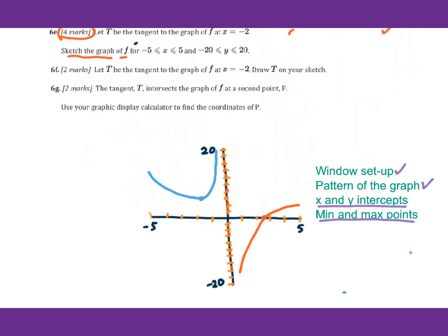For 6f, let t be the tangent to the graph f at x equals to negative 2. We know this is at negative 2, this point. Draw t on your sketch — that is the horizontal line. Make sure you pass through this point and pass through this 6.